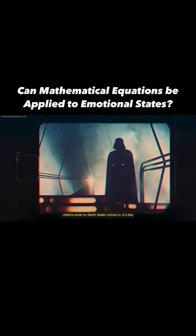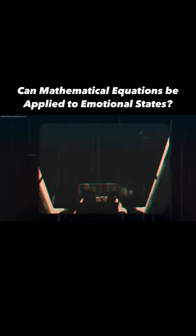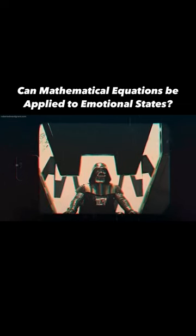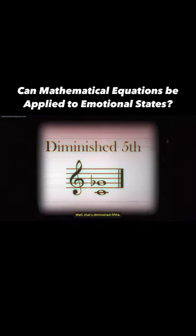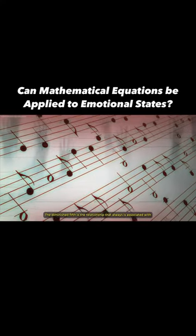Whenever villains enter or Darth Vader comes in, it's like dun, dun, dun, dun, dun, dun. Well, that's diminished fifths. The diminished fifth is the relationship that's always associated with devilishness—like the villain is coming in.